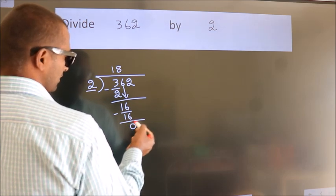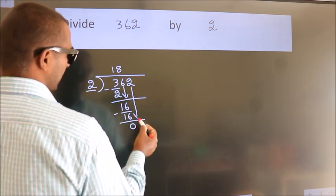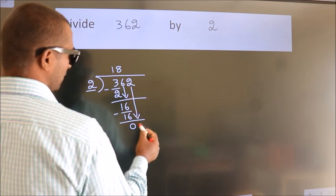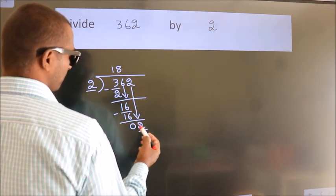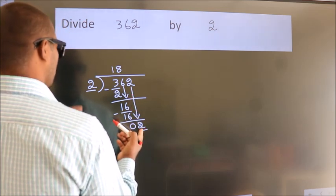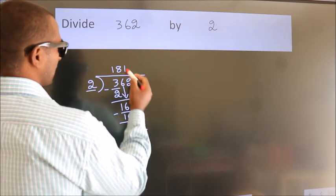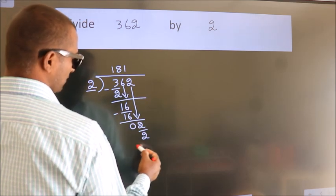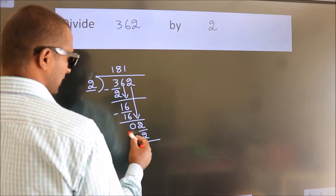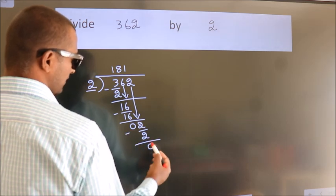After this, bring down the beside number. So 2 down. So 2. When do we get 2? In 2 table, 2 ones 2. Now we subtract. We get 0.